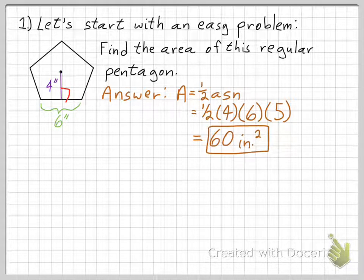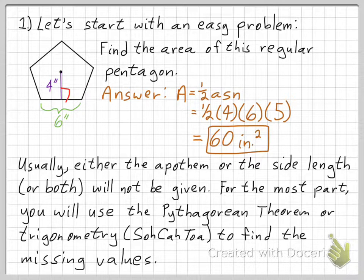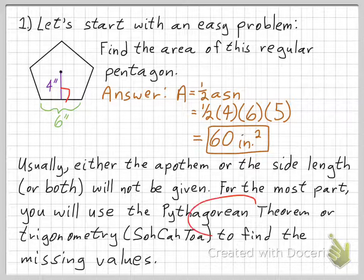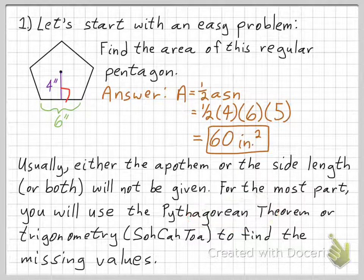Usually either the apothem or the side length, or both, will not be given. For the most part, you will use the Pythagorean theorem or trigonometry using SOHCAHTOA to find those missing values. I'm going to follow up this lecture with two more problems — one using the Pythagorean theorem, and one using SOHCAHTOA to find missing values.